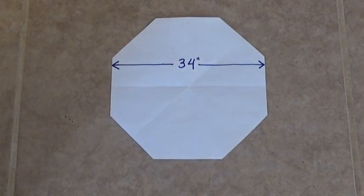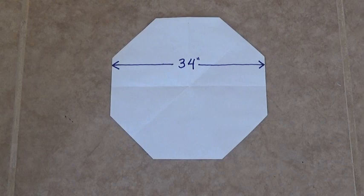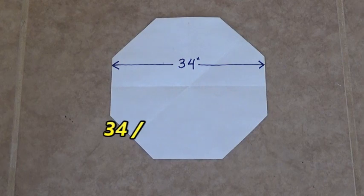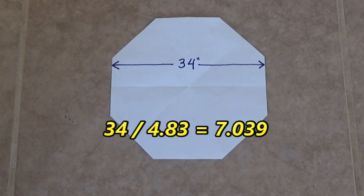So before cutting out the parachute, we need to do some quick math. I'm going to take the width of the parachute. You can use inches or centimeters, it doesn't make any difference. My parachute is 34 inches wide. Take that number and divide it by 4.83. The answer I come out with is 7.039.